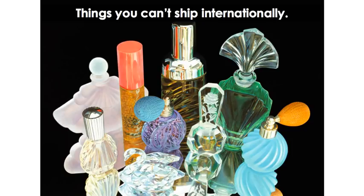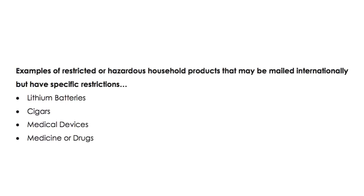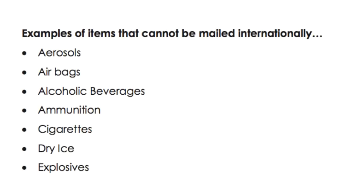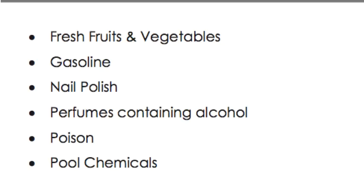Let's talk about things you cannot ship internationally. Examples of restricted or hazardous products that may be mailed internationally but have restrictions are lithium batteries, cigars, medical devices, and medicine or drugs. Items that cannot be mailed internationally at all include aerosol cans, airbags, alcoholic beverages, ammunition, cigarettes, dry ice, explosives, fruits and vegetables, gasoline, nail polish, perfumes containing alcohol, poison, and pool chemicals.